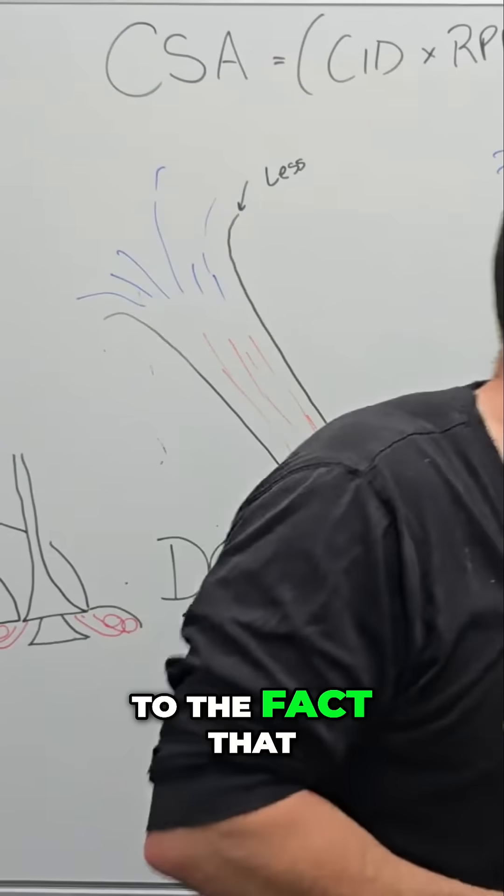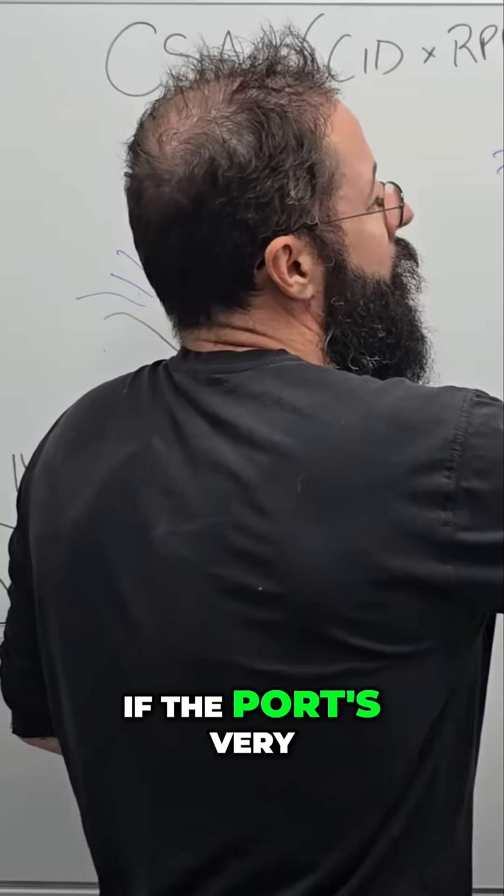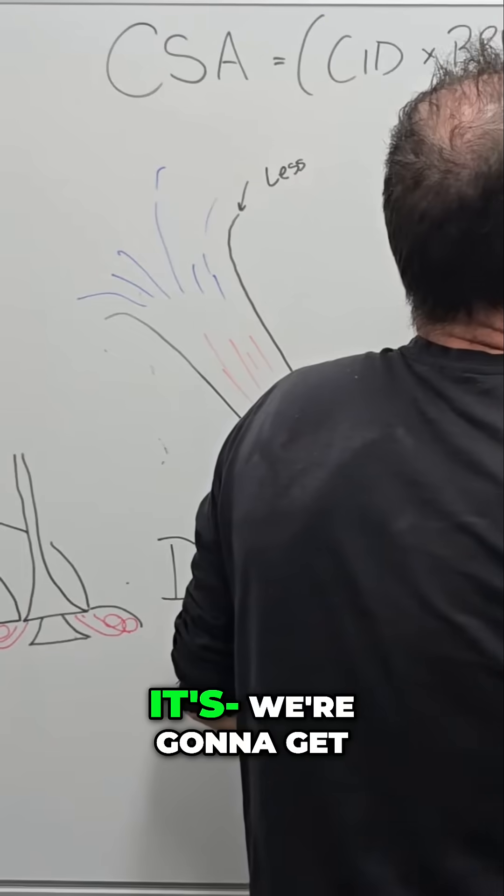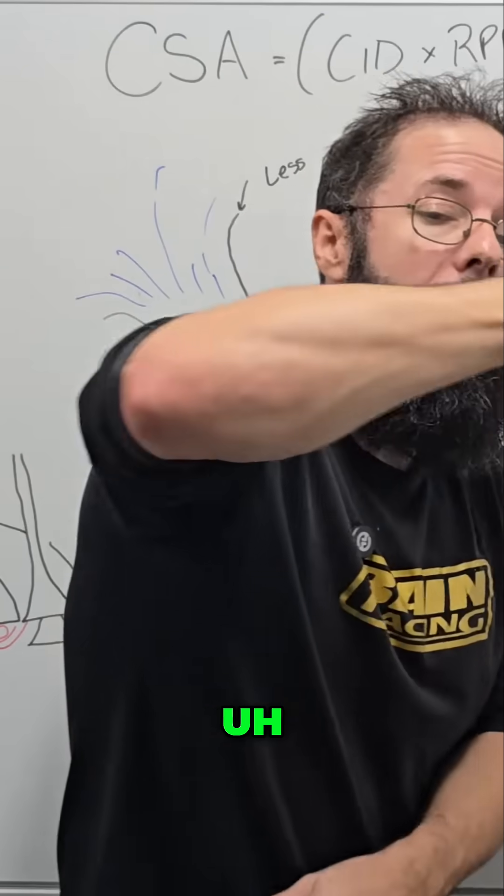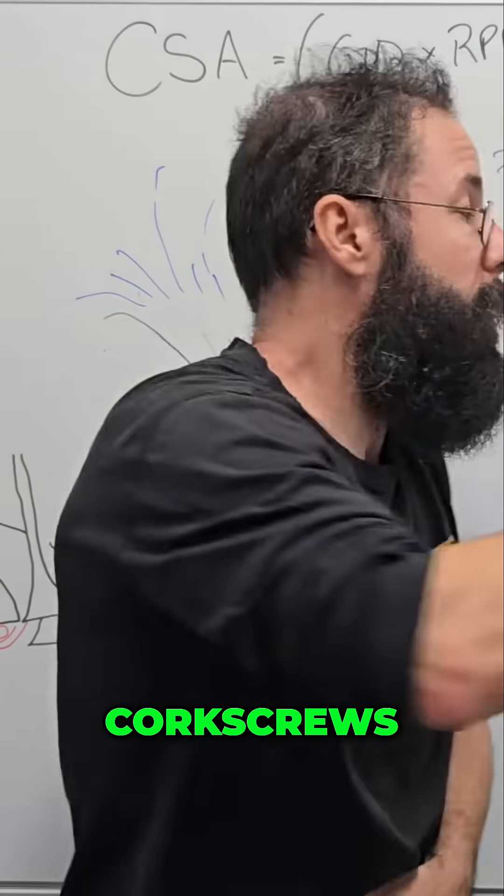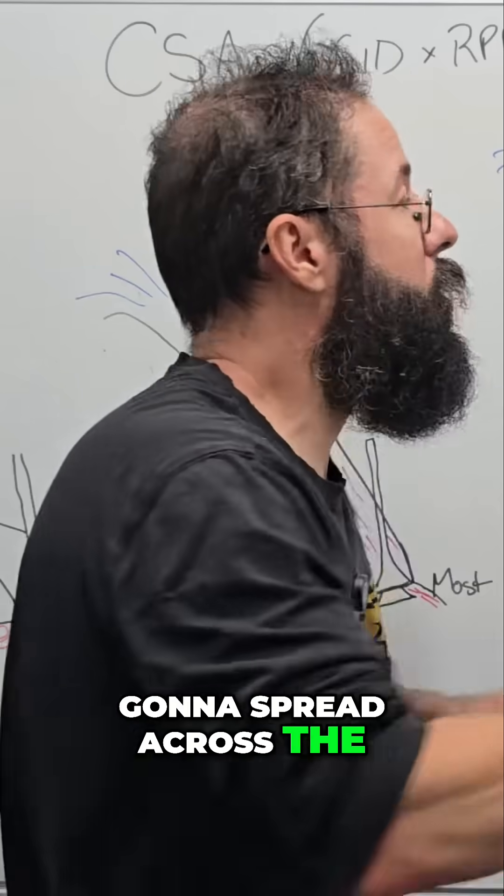And that comes down to the fact that if the port's very low and we add a lot of swirl, we're going to get these really short corkscrews. It's not going to spread across the chamber properly.